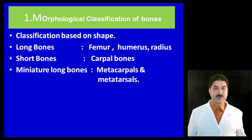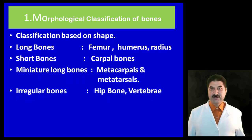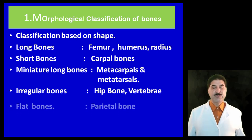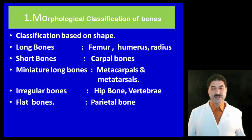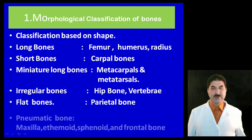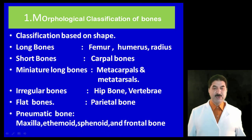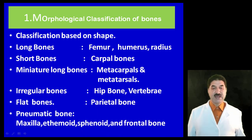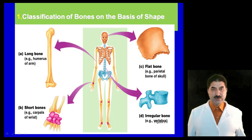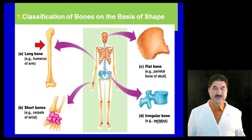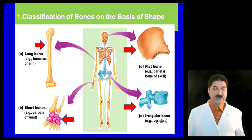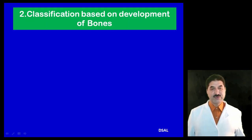Miniature long bones include the metacarpals and metatarsals. Irregular bones include the hip bone and vertebrae. Flat bones include the parietal bone of the skull. Pneumatic bones include the maxilla, ethmoid, sphenoid, and frontal bone. So bones are classified by shape: long bones, short bones, flat bones, and irregular bones.